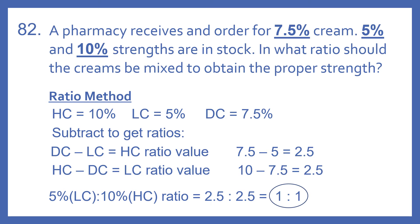Then to get our low concentration ratio, we take our high concentration minus our desired concentration: 10 minus 7.5 is 2.5. So our 5% to 10%, our low concentration to high concentration ratio, is 2.5 to 2.5, and that equals a ratio of 1 to 1.